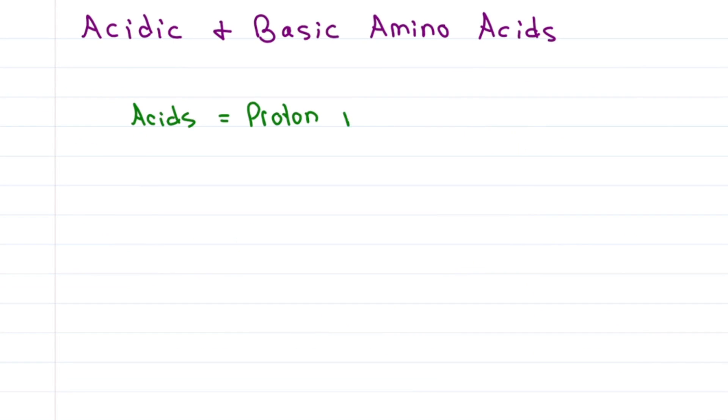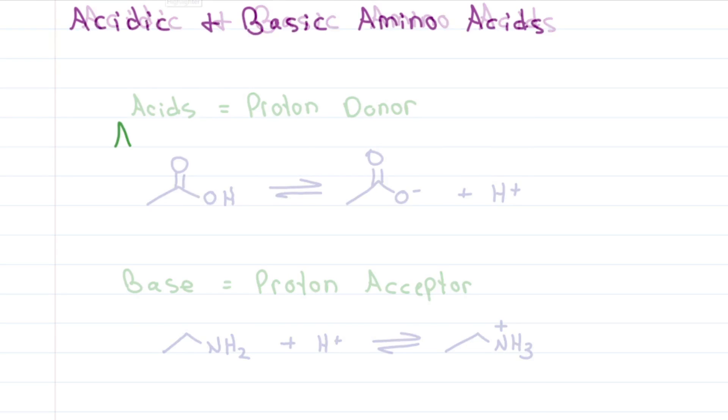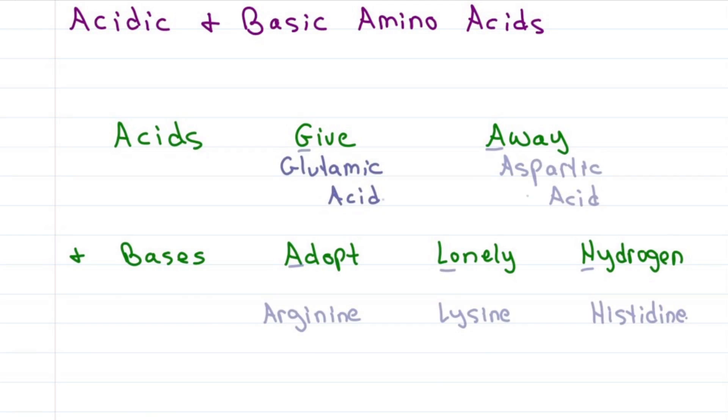Acids are proton donors. Amino acids have a carboxy group that donates a proton at low pH. That means we have a negative carboxylate at physiological or the mid pH ranges. Basic amino acids will accept a proton on their basic nitrogen to give a positive nitrogen at the middle pH ranges. Or just remember acids give away and bases adopt lonely hydrogen to remind you of the acidic and basic amino acids.